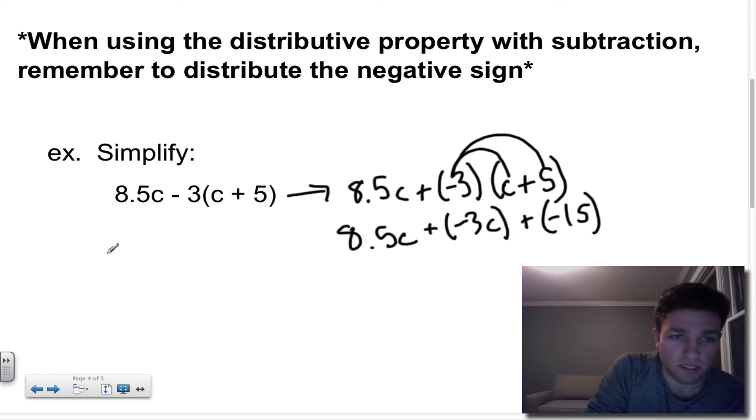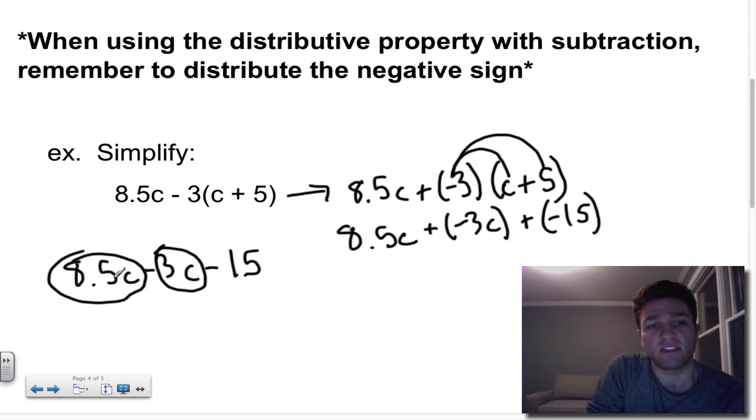So let's look at this. This should then look like 8.5 times c plus, now if I'm distributing this correctly, negative 3 times c is negative 3c plus negative 3 times 5, negative 15. And you could rewrite this a lot simpler. 8.5c minus 3c minus 15. All I did was I then changed this back. And instead of adding a negative, I just changed the 2 back to subtraction. And then I should notice that I have 2 like terms that I can combine. So 8.5 minus 3 is 5.5 and keep the variable c minus 15.